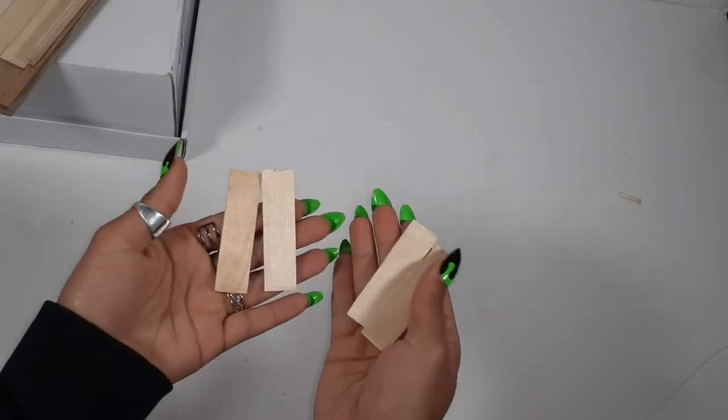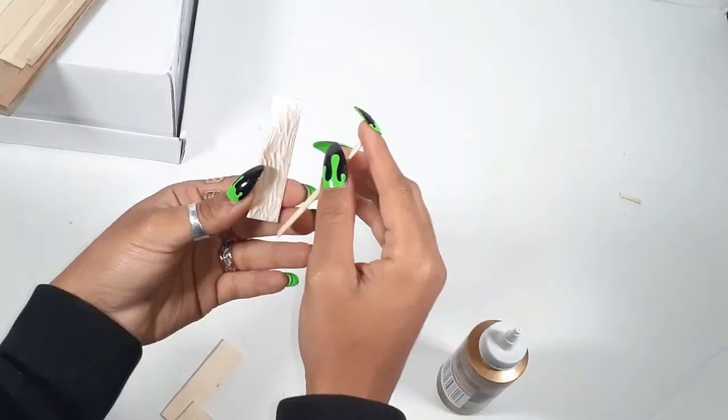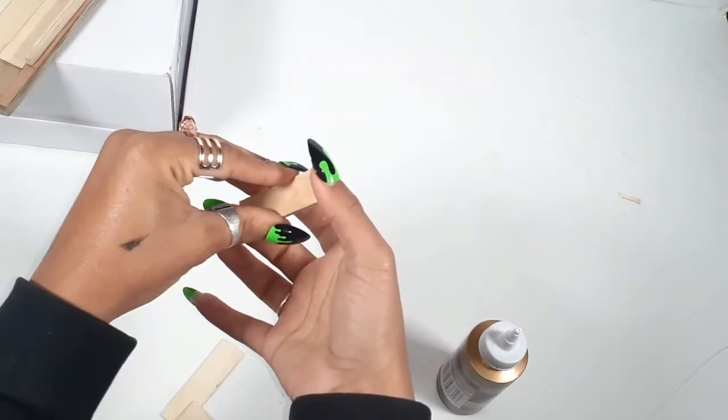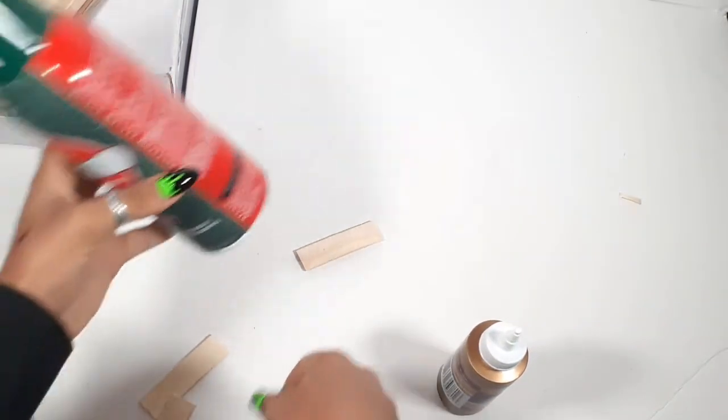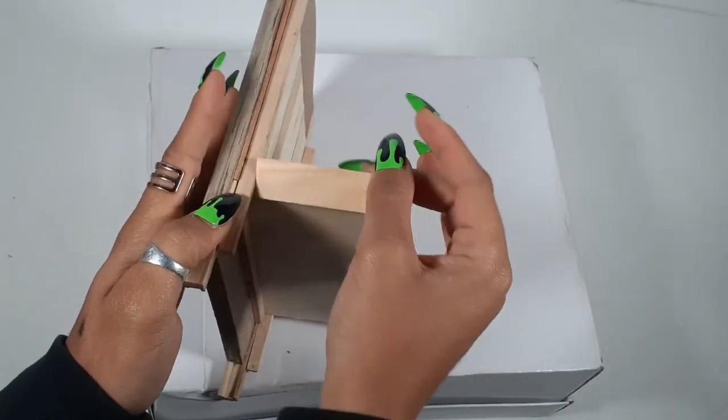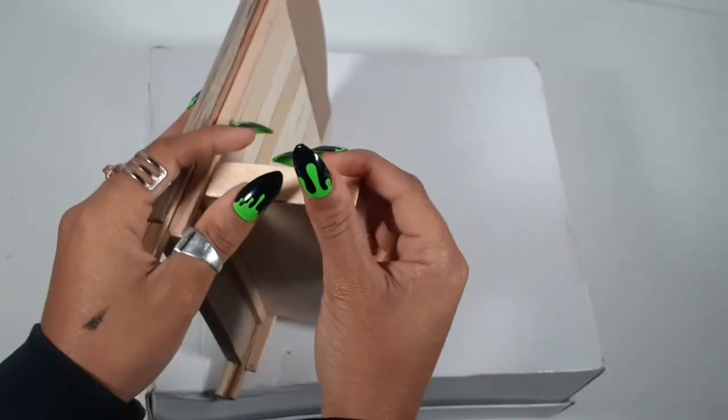Make four and then you can start gluing two and two together. Now I'm placing a heavy object on it just to keep everything together. After it's dry, you can start gluing it together.